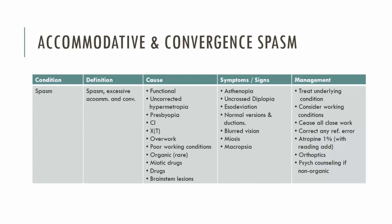You can prescribe orthoptics in these patients — exercises such as negative relative fusion vergences — but you would do so after completing the atropine regime and once accommodation is back under control. Finally, with an accommodative and convergent spasm, the cause is often functional, meaning it relates to some emotional disturbance or stress the patient is experiencing at that time. If this is the case, you should refer the patient on to counselling.